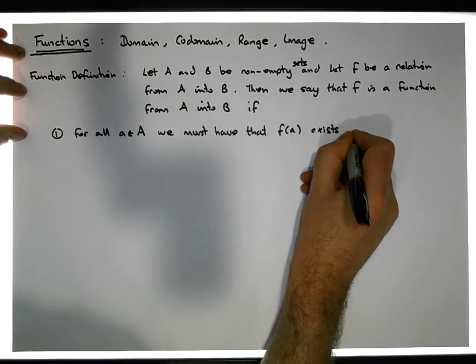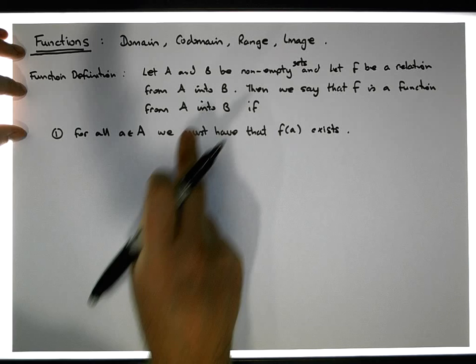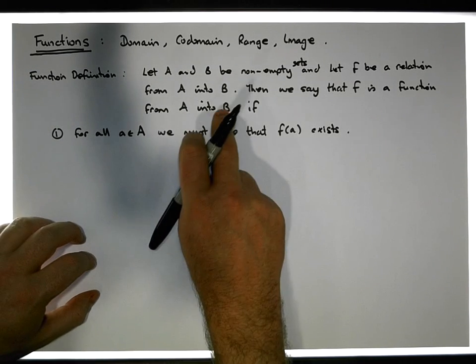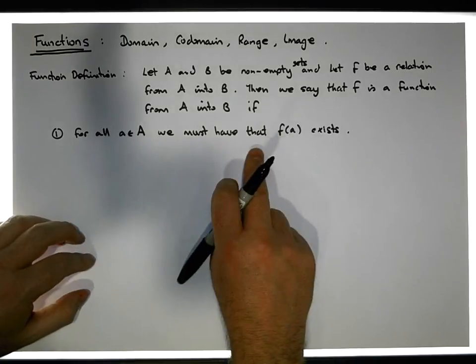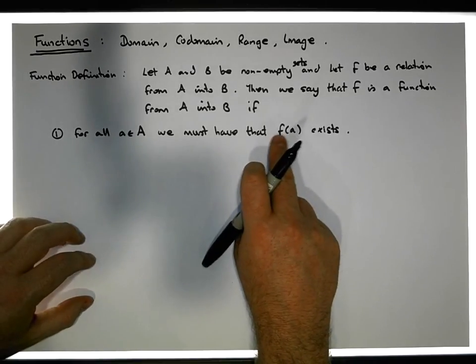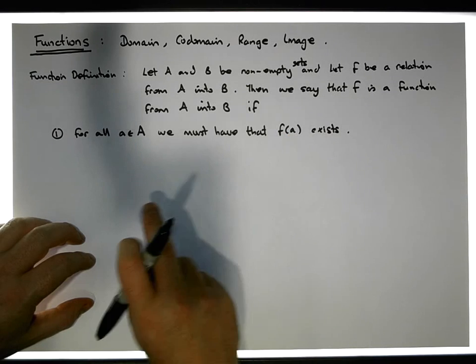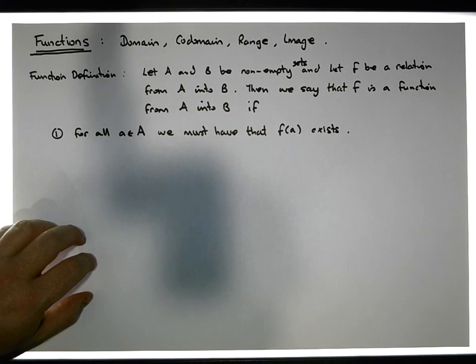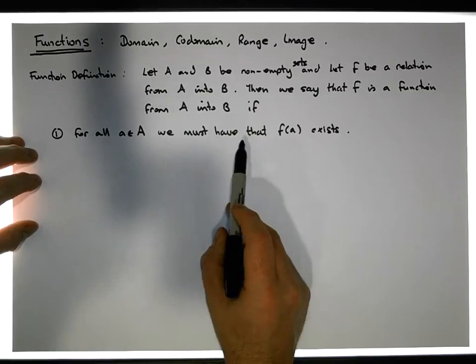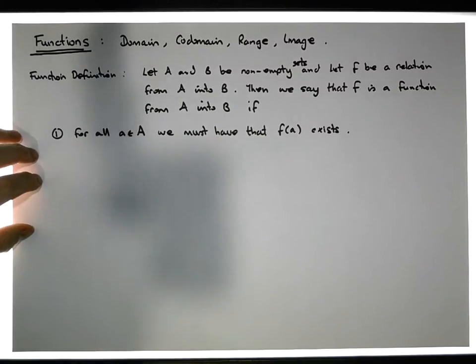So for all a's that are an element of the set A, we must have that f(a) exists. In other words, we can map values from A into values in B, and every value from A is taken to some value in B. The application of the function to the value a exists and is a value in the set B. What we're really saying here is that the domain of f is equal to A, but I'll get back to that in a moment.